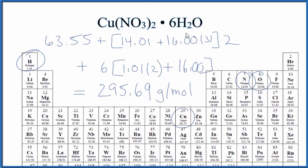What that means is if we had one mole of copper 2 nitrate hexahydrate, the mass would be 295.69 grams.